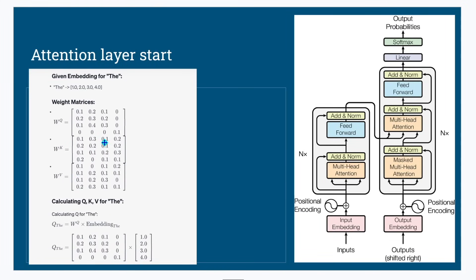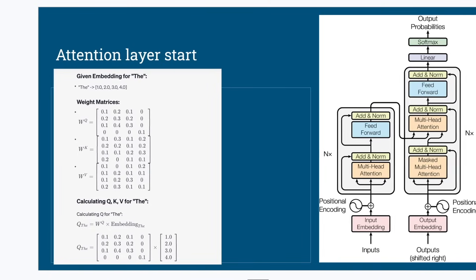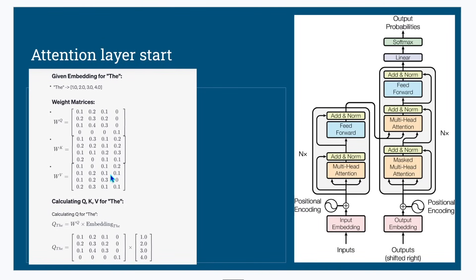Every attention layer contains query weights, key weights, and value weights. Where do these weights come from? These weights are first randomly initialized, then during training they get learned. So these are the learned weights used to calculate the query, key, and value for each token.